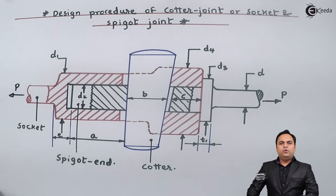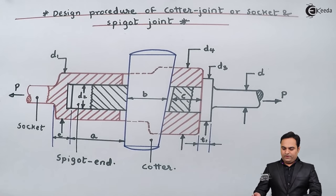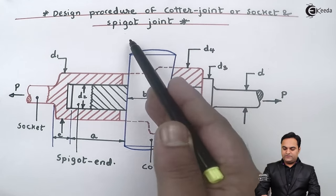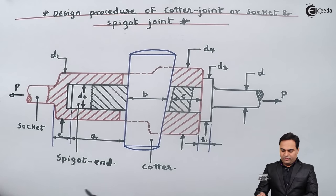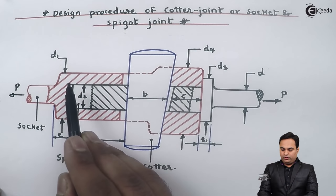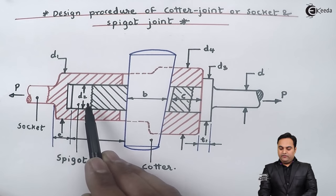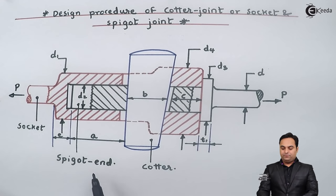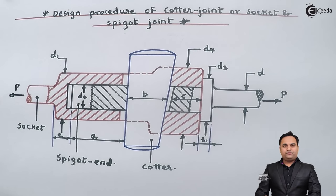Hello friends, in this video we will see the design procedure of cotter joint. Here I have a diagram of the cotter joint, also called socket and spigot joint. It consists of three main parts: the first is the socket, shown here in red. Inside that socket we have another part called the spigot or spigot end, which is inserted into the socket. The third part is the cotter, which is used to assemble the socket and spigot.